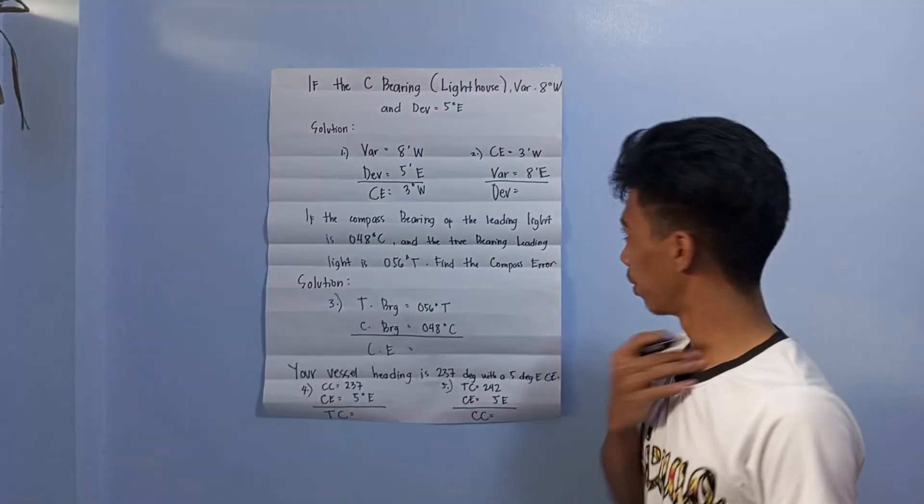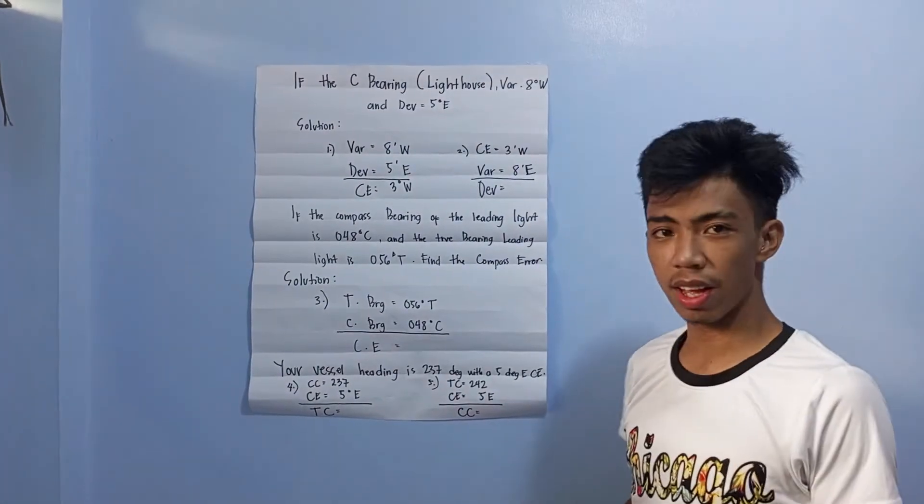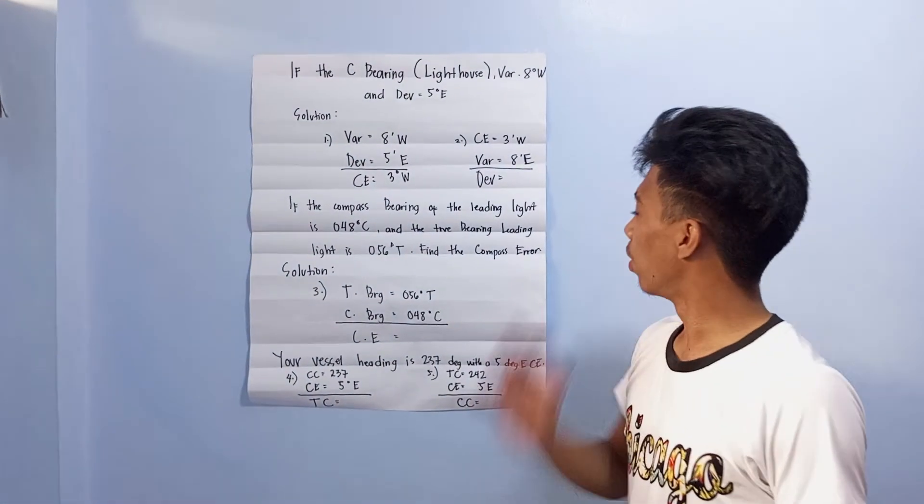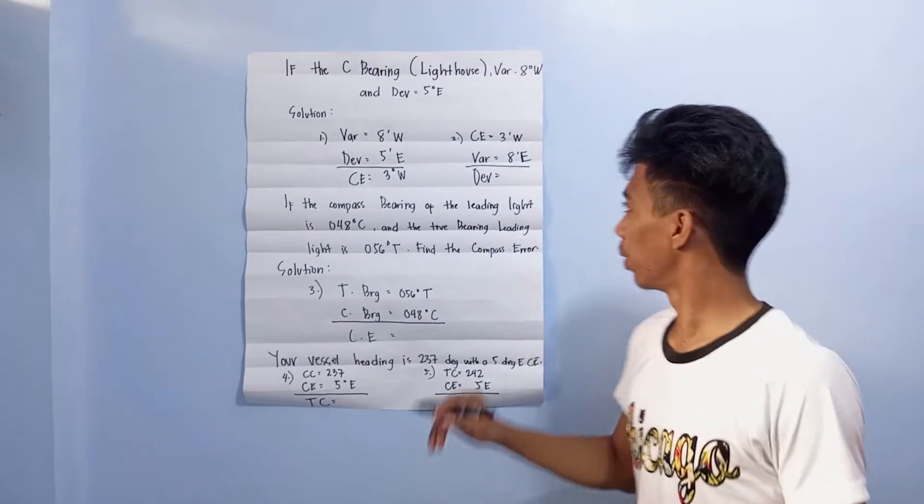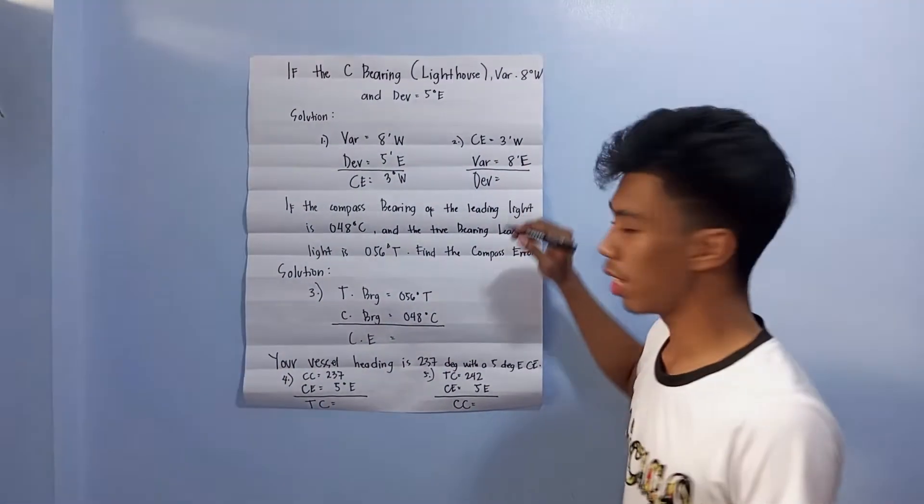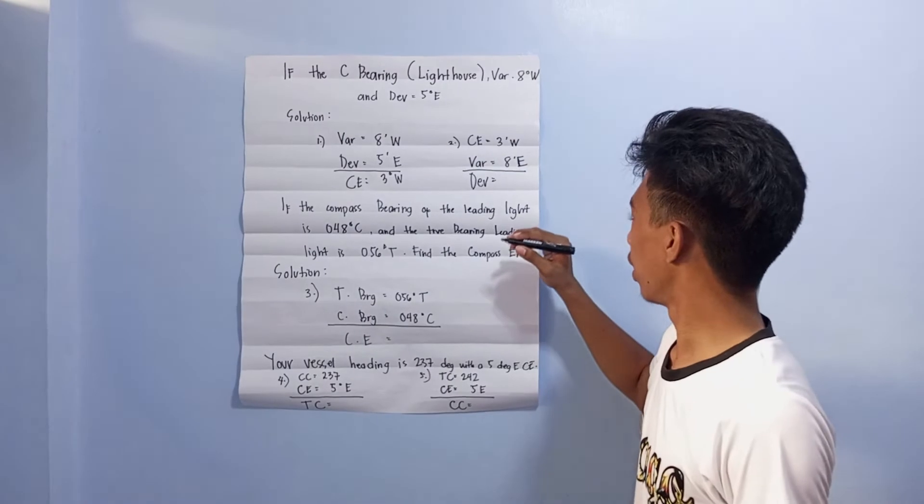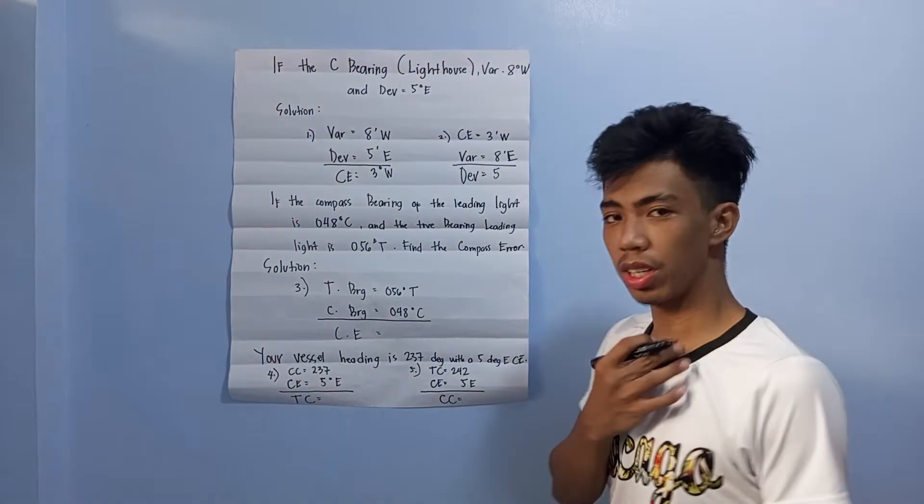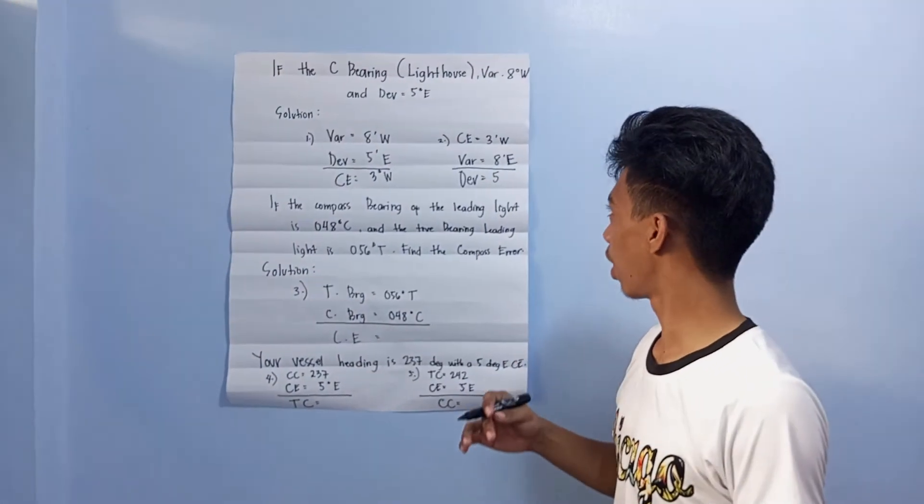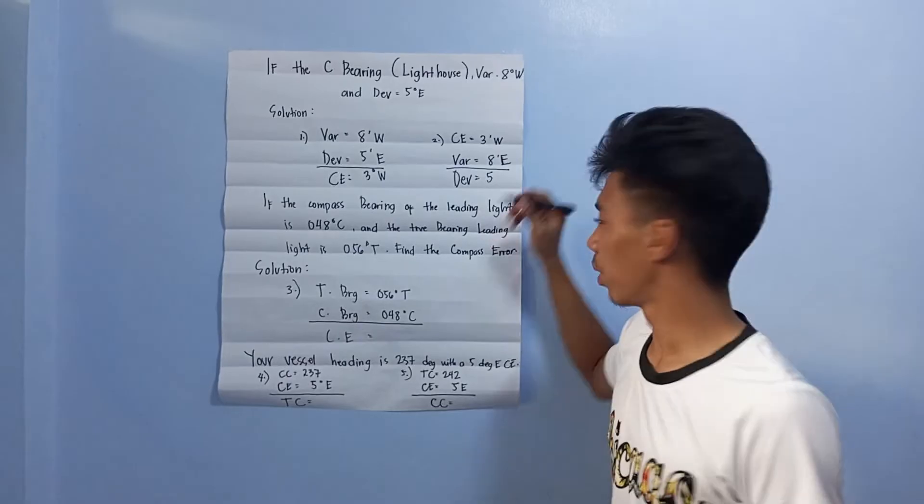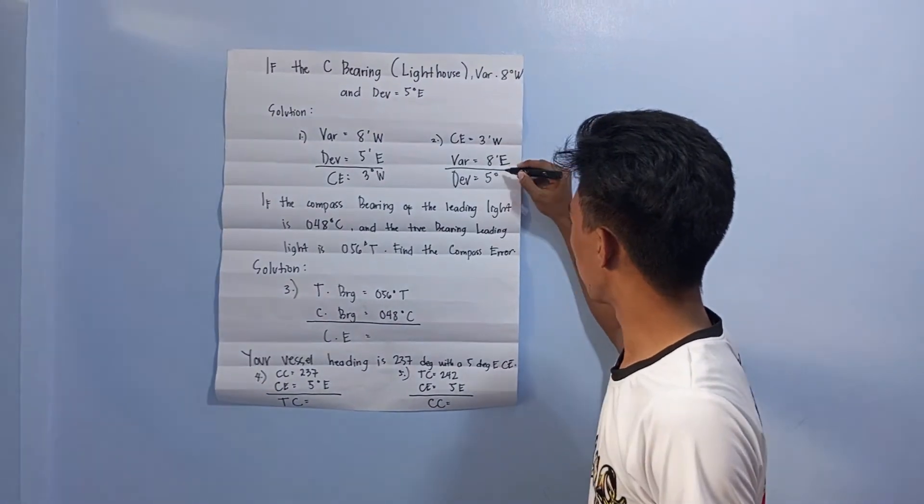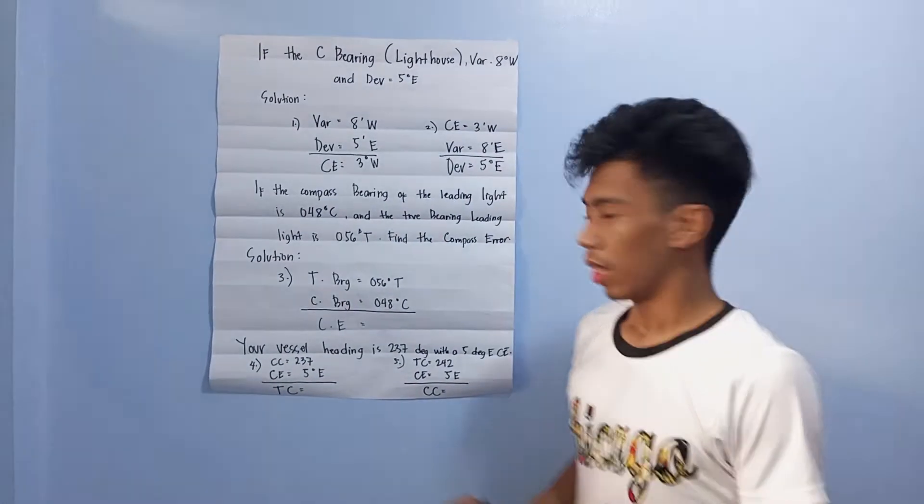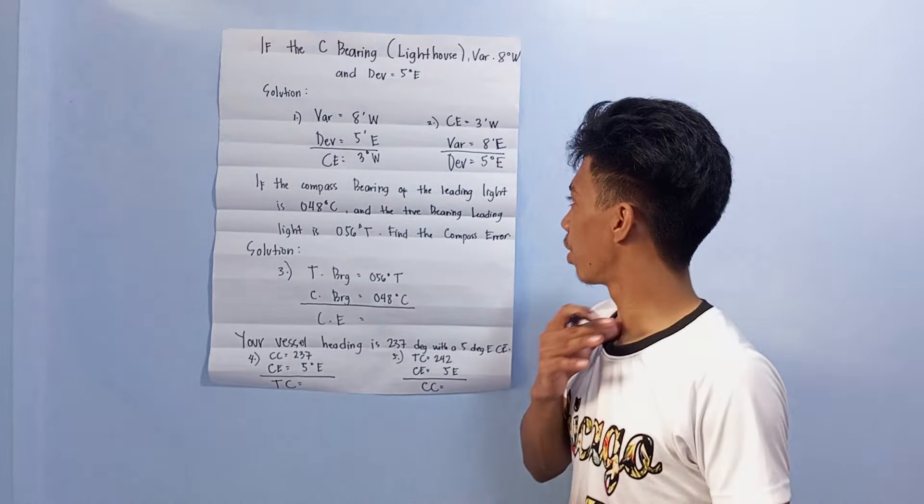Second question: find the division given the compass error and variation. Minus three west minus eight east. The answer is five degrees, and we bring down the higher amount. It is eight, so copy east.